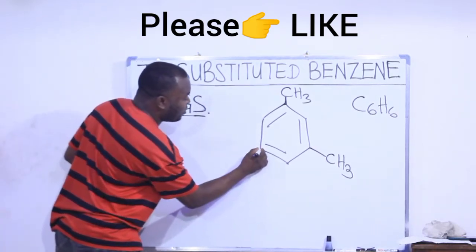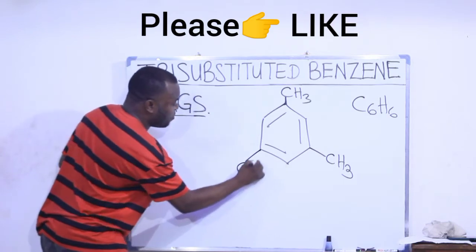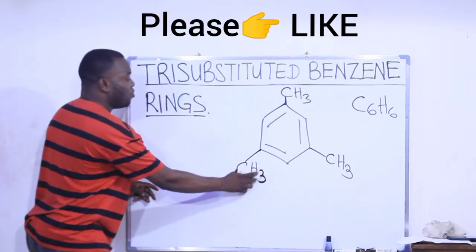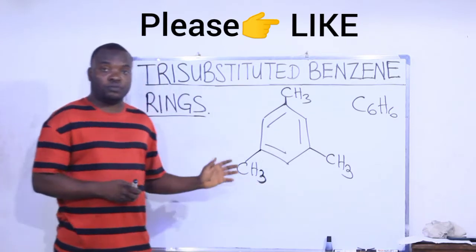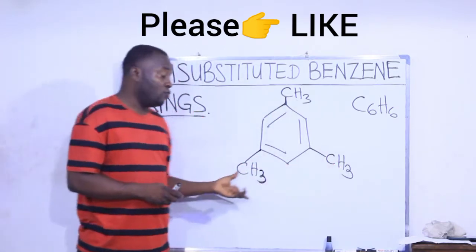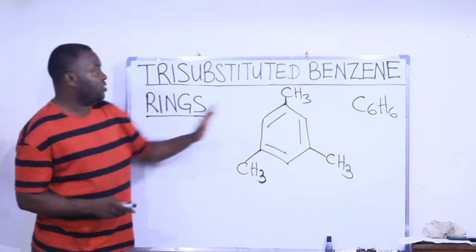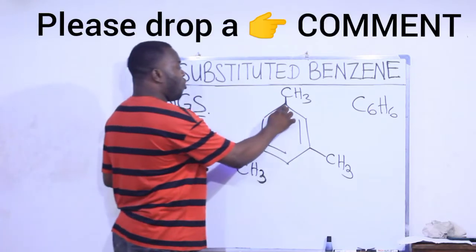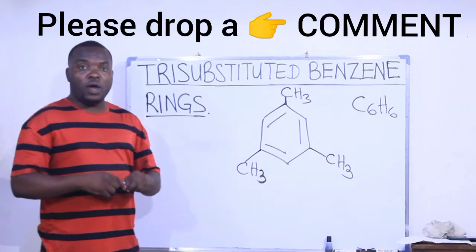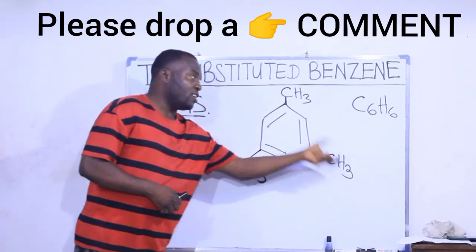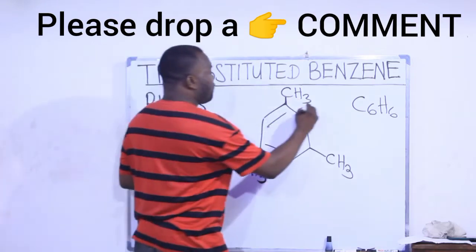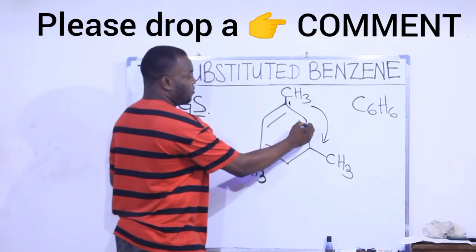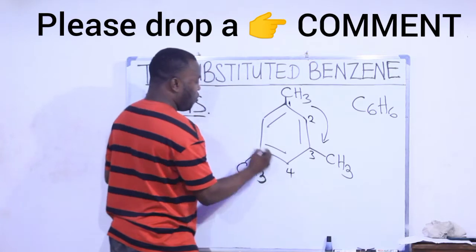If I go ahead and replace another H — maybe the one here — with another methyl group, I have now substituted a total of three hydrogen atoms on this ring and replaced them all with methyl groups. Because I have substituted three hydrogen atoms with another group, I will call this a trisubstituted benzene ring.